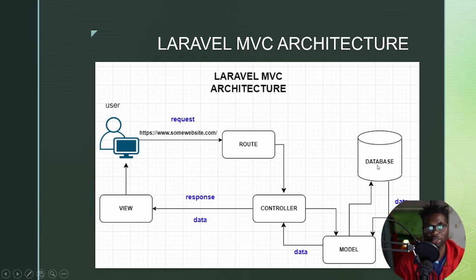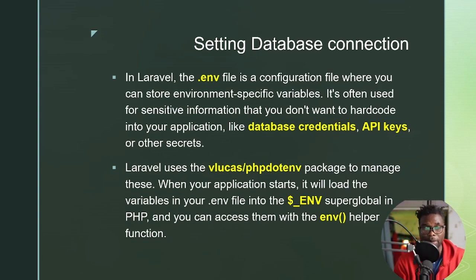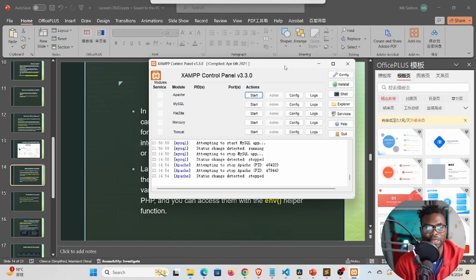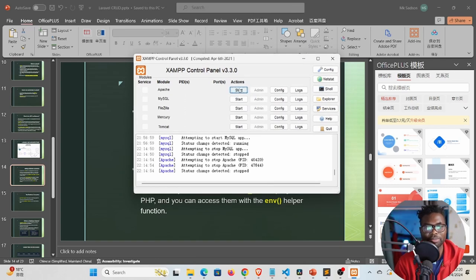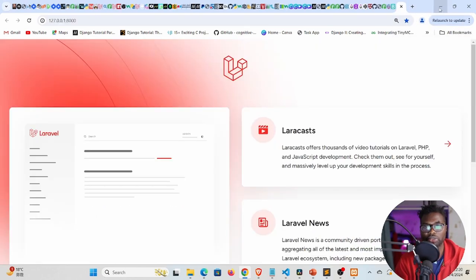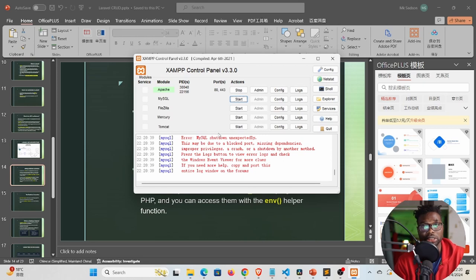We're going to start from the database — set it up and make sure it's running, then look at the model, controller, and view. To set our database connection we first need to make sure MySQL in XAMPP is up and running. I'll open the XAMPP control panel, start Apache, and then start MySQL. The default port is 3306 but we want to change that port.